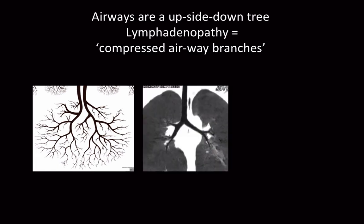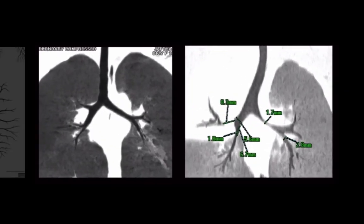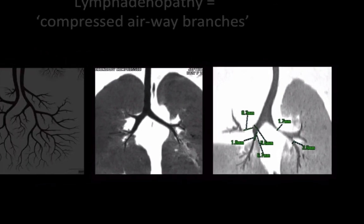Airway compression should be an indirect sign that helps you make the diagnosis. Here's a CT scan of the normal airway — smaller and smaller branches coming off the main branches. And this is TB in a child on CT with coronal reconstruction. You can see the narrow areas of the bronchial tree. You don't have to remember any numbers. Thinner branches are supposed to be more peripheral — if you've got a big branch further out and a narrower branch more proximally, you can be sure this is compression. It's not the only cause of compressed airways in children, but when you're looking for TB it's quite important.